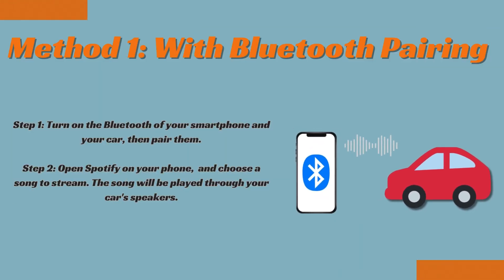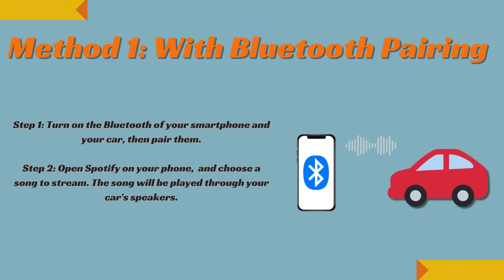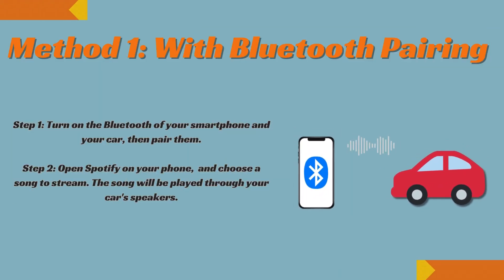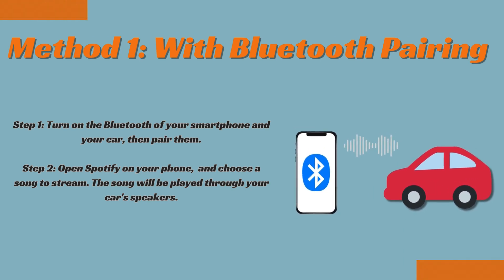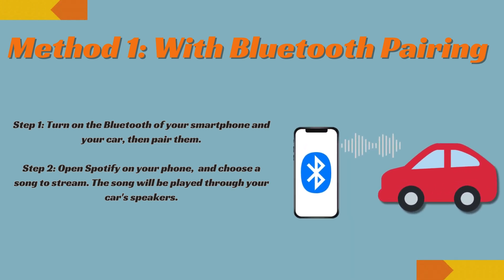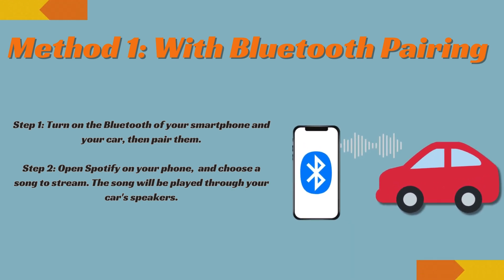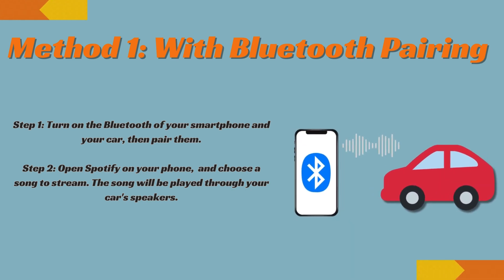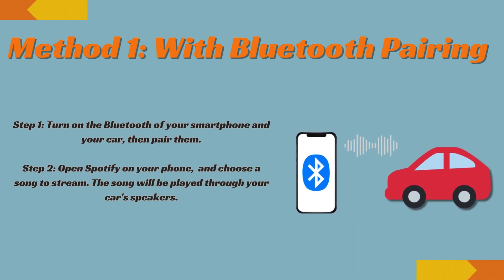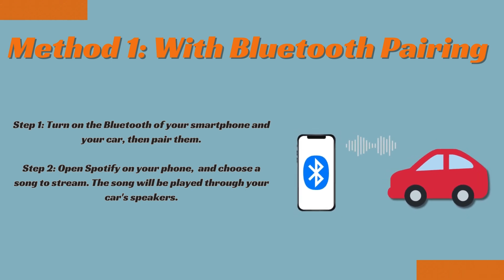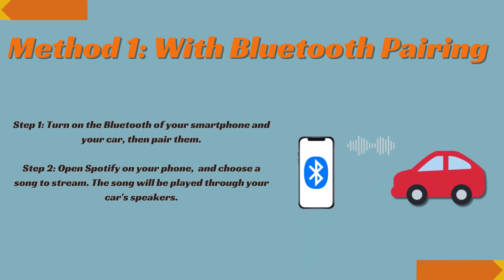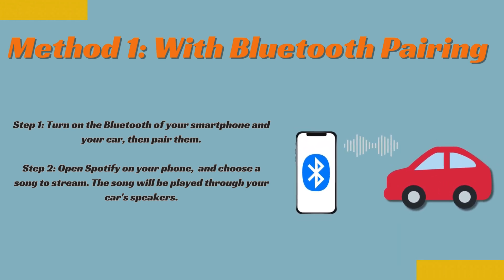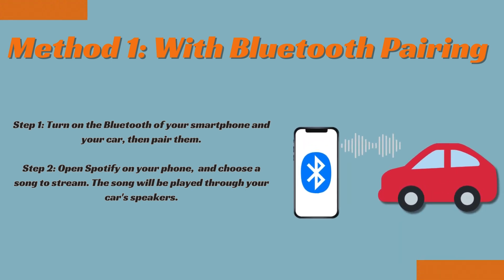Method one: Bluetooth pairing. Step one, turn on the Bluetooth of your smartphone and your car, then pair them. Step two, open Spotify on your phone and choose a song to stream. The song will be played through your car speakers.